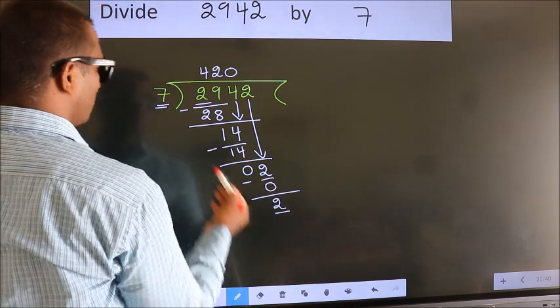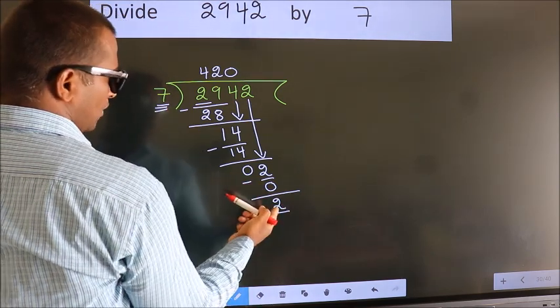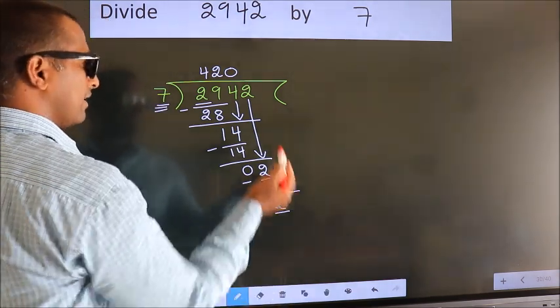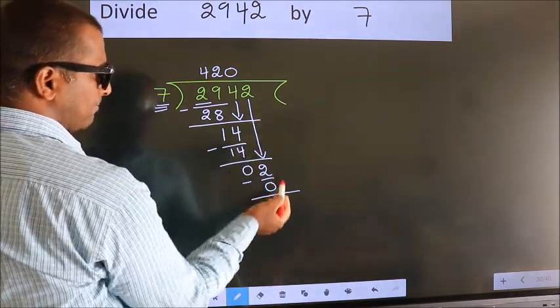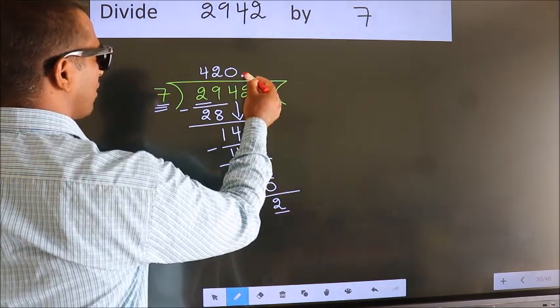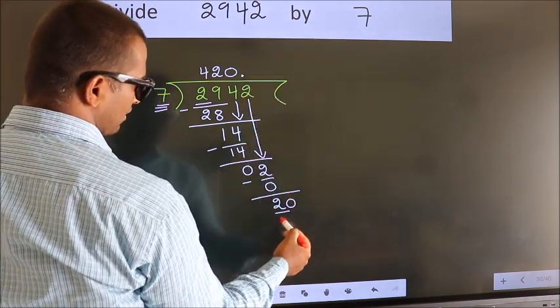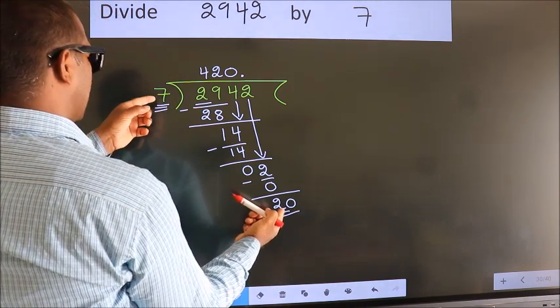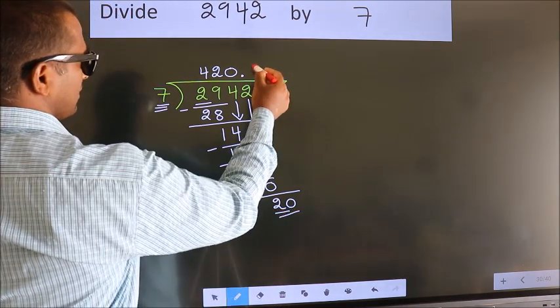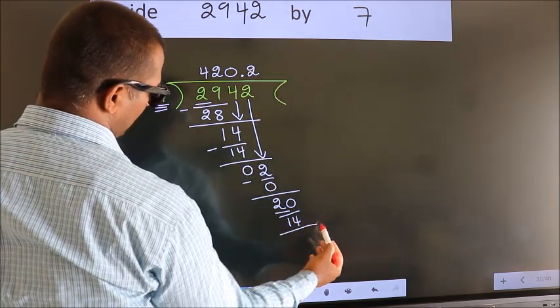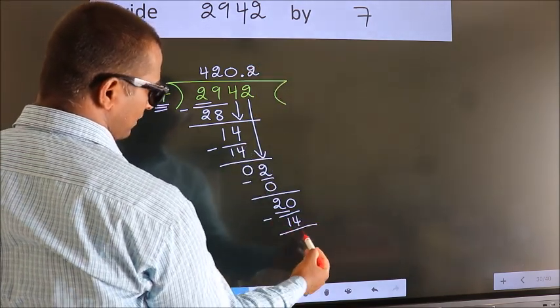Here we have 2. Here 7. 2 smaller than 7. And we did not bring any number down. So now we can put dot, take 0. So 20. A number close to 20 in 7 table is 7 twos, 14. Now we subtract. We get 6.